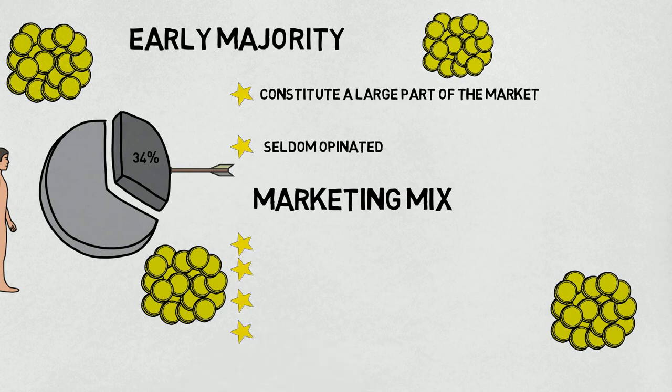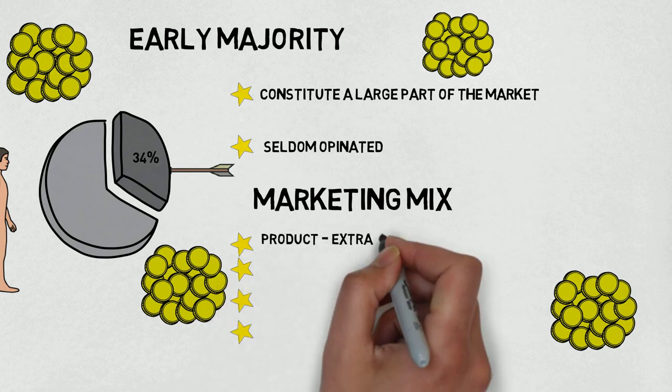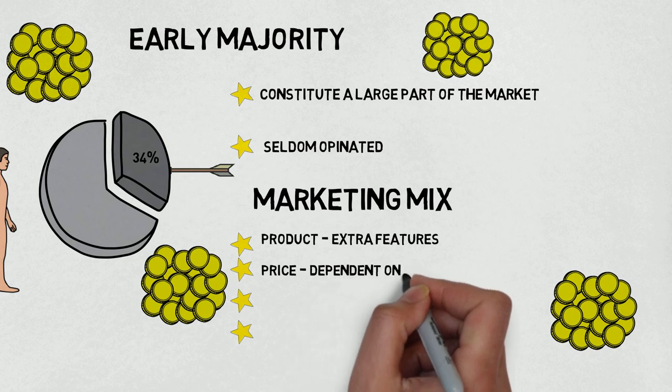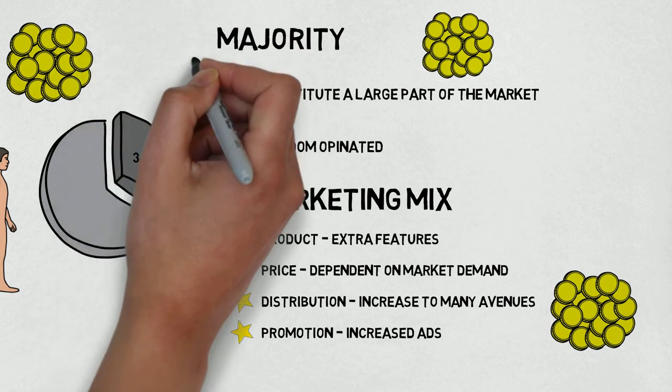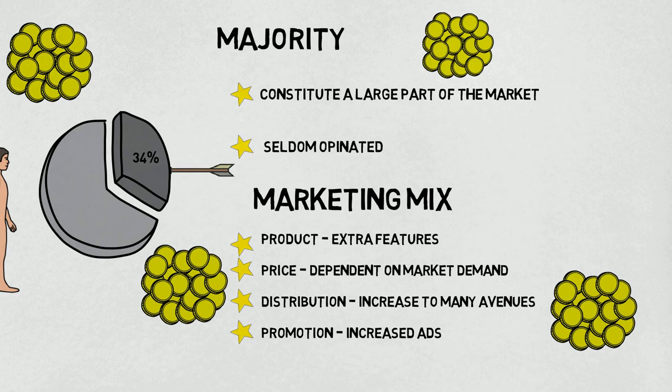The marketing mix for sunglasses was modified as follows. Product: An app feature to download different patterns were added. Price: Maintained at high level if the demand was high or reduced to capture additional customers. Distribution: Website and premium DJ stores. Promotion: Increased ads through Google advertising using demographics and psychographic market segmentation.